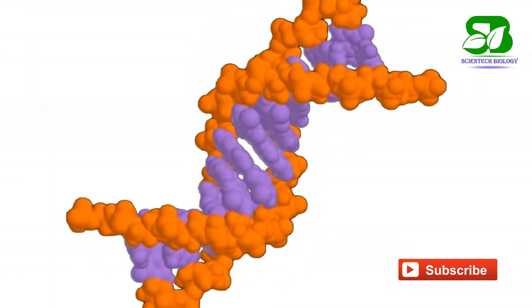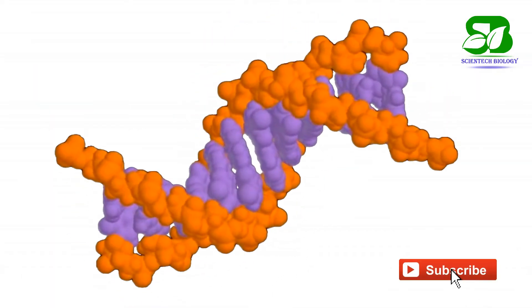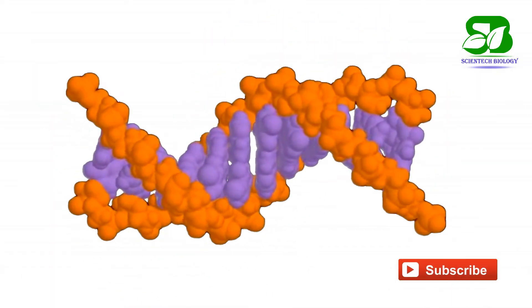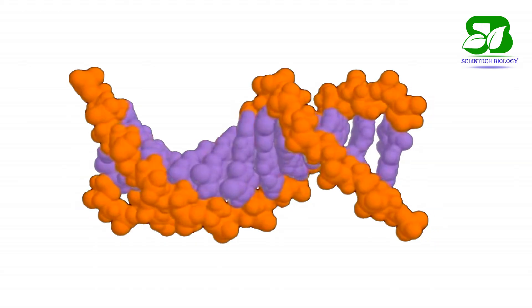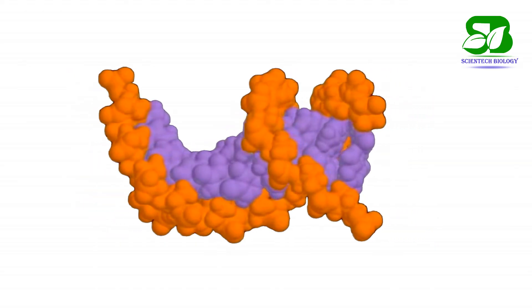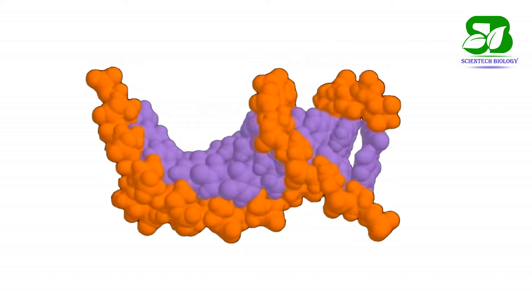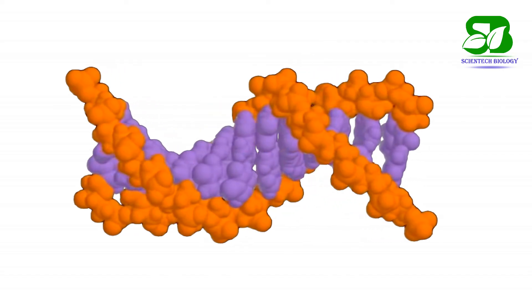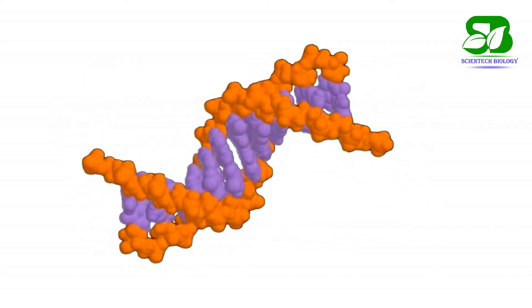Along the whole length of the helix, the major groove is always directed towards the inner face of the helix, and the minor groove is always directed towards the outer face of the helix.